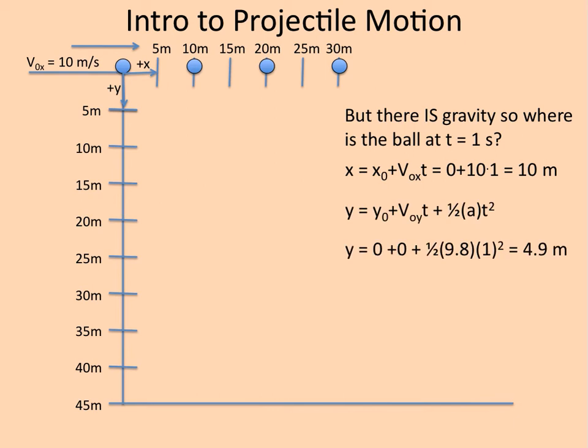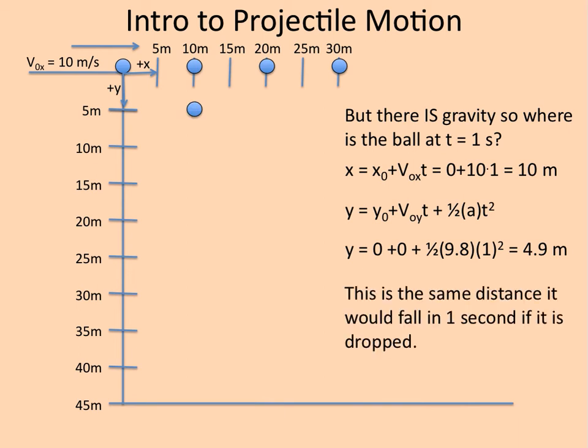In the y direction, it's going to be 4.9 meters below where it would be if there was no gravity. That's the same distance it would fall in one second if it was dropped. We found the location of the object by breaking this apart into x motion, which was pretty easy, and y motion, which wasn't too much tougher.